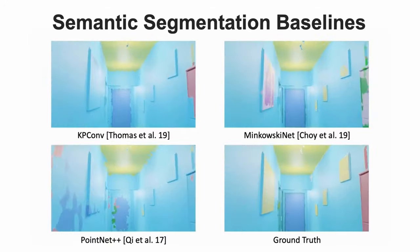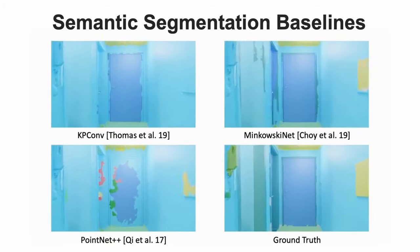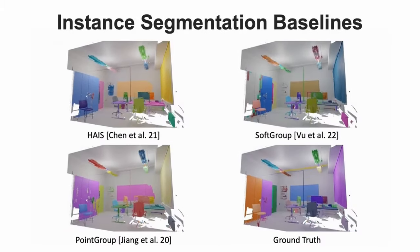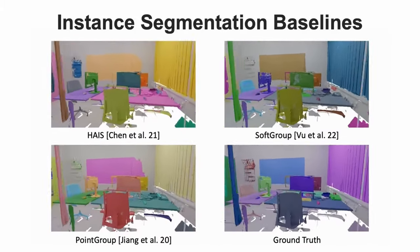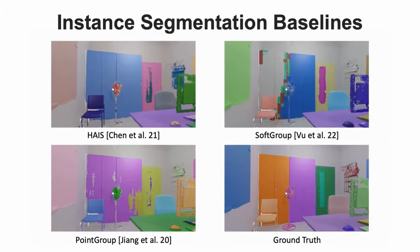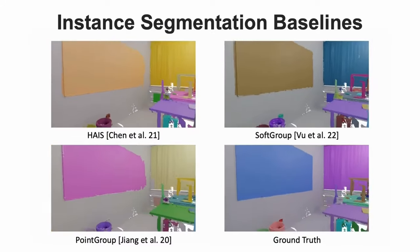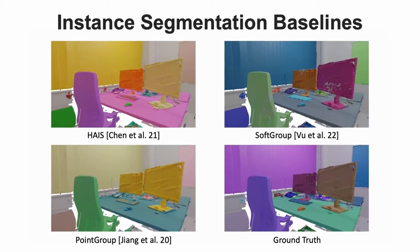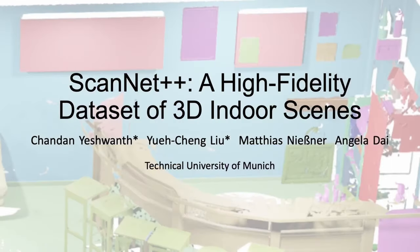We benchmark both 3D semantic segmentation and instance segmentation with state-of-the-art baselines on long-tail and fine-grained annotations. State-of-the-art methods work well on distinct, large objects such as chairs and tables, but leave room for improvement on smaller objects and ambiguous classes. Our dataset and benchmark will be made publicly available. We hope that ScanNet++ will open up new challenges and stimulate development of new methods for novel view synthesis and semantic scene understanding.